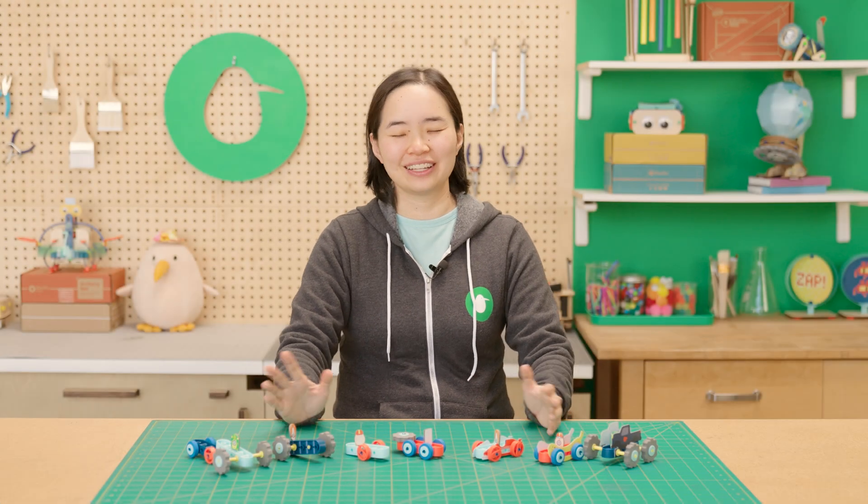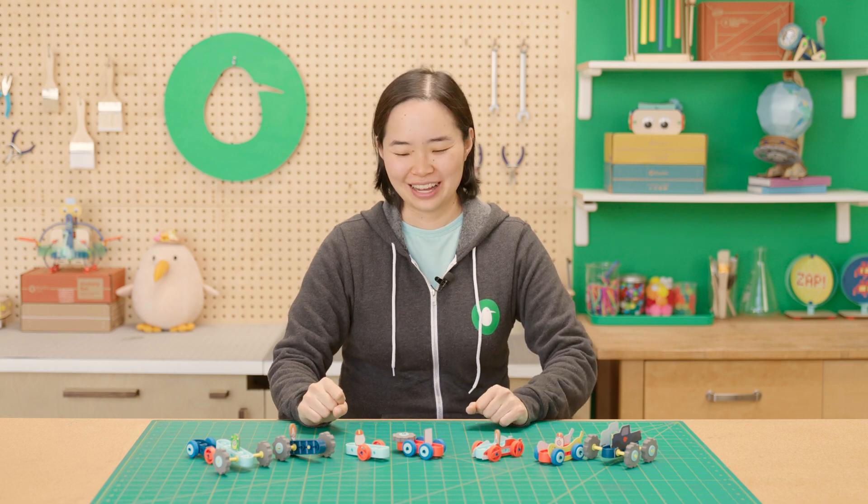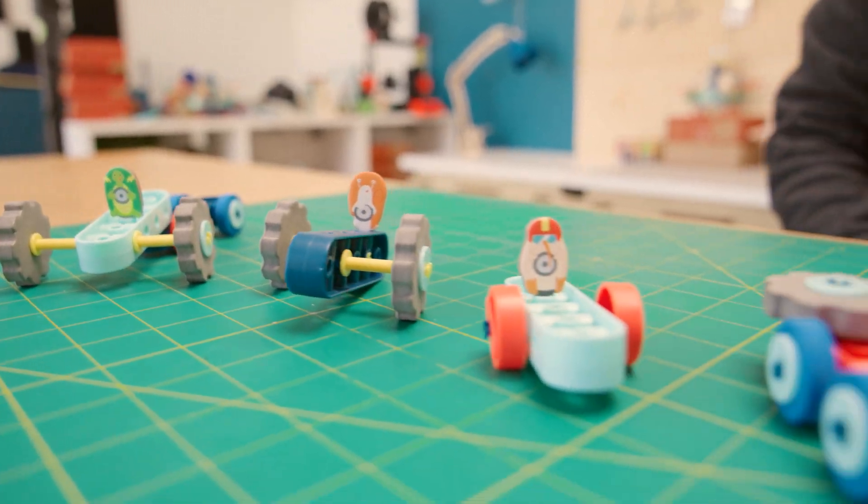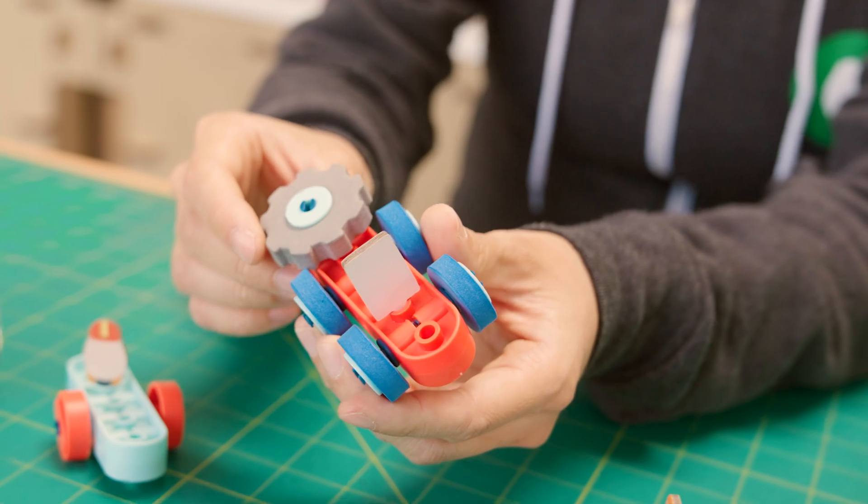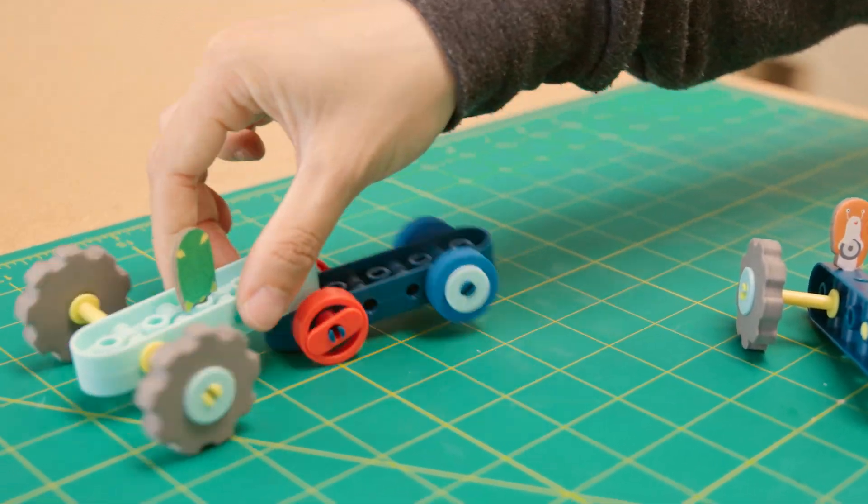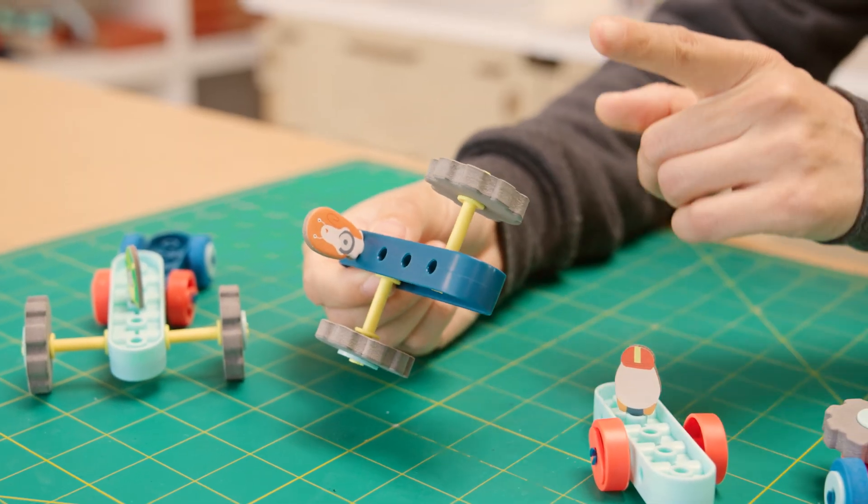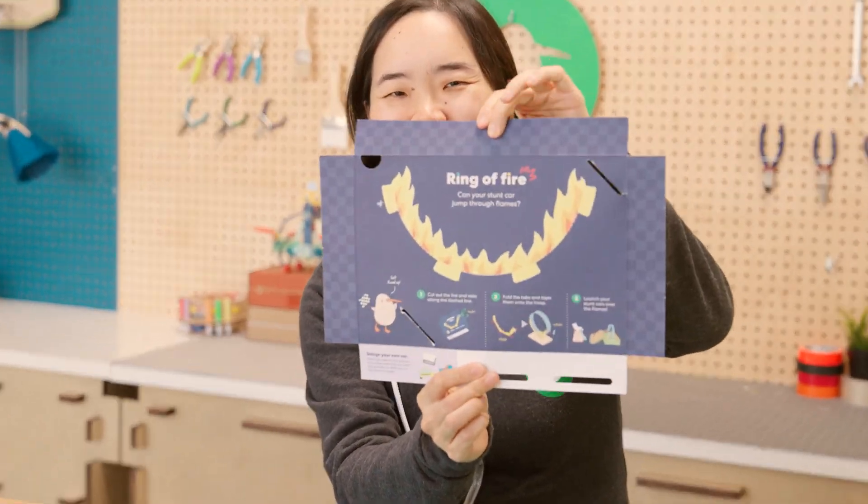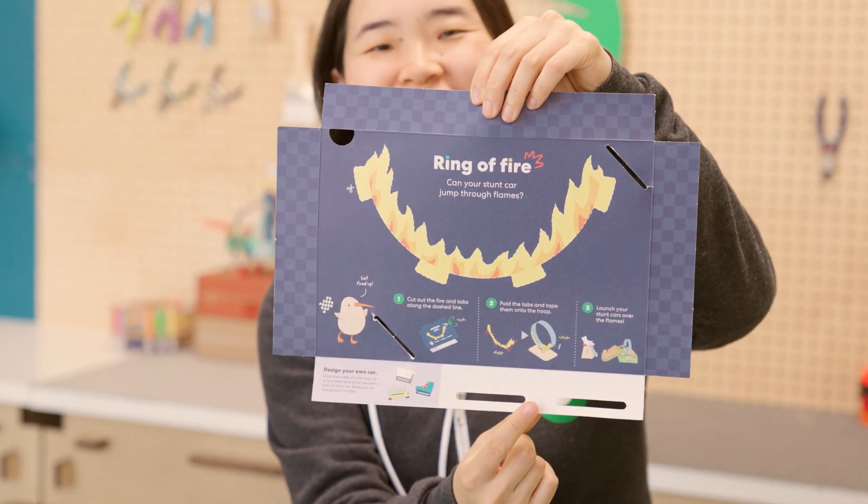Now that you've finished building, let's customize your stunt car. We have some examples here from the KiwiCo Car Show. We've got draw your own driver with the bumper. We've got two connected together. And here are some wacky ideas for wheels. You can also customize your hoop with this ring of fire or make your own cars.